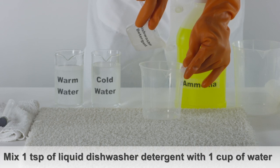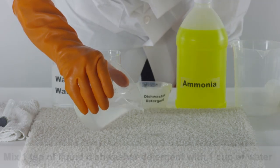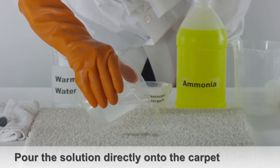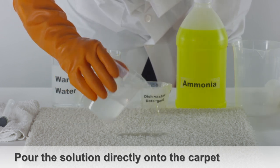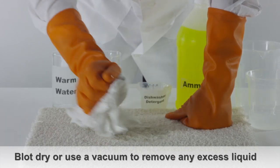Take one teaspoon of liquid dishwasher detergent and mix it with one cup of warm water. Pour the solution directly onto the carpet until the stain area is covered. Blot dry the area or use a vacuum to remove any excess liquid.